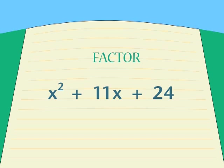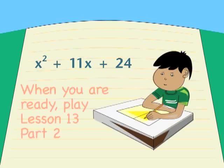Try this one on your own. Remember what your two numbers have to do. Add up to the middle term, multiply out to the last term. Pause the program while you work out your answer. Click play again when you're ready to compare solutions.